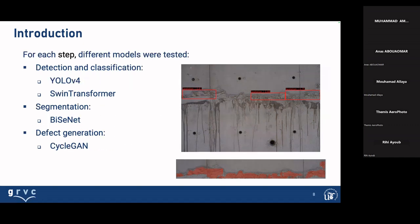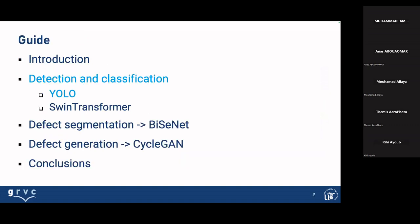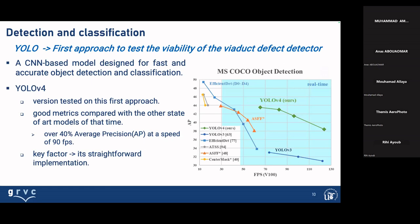As an introduction, for the different models we tested, let me explain about one of the more common and well-known: YOLO. Concretely, we used YOLO before, then the Swin Transformer with very good results. For segmentation, we use BiSeNet, and for generation, we use CycleGAN. YOLO was the first approach to test the viability of the viaduct defect detector.